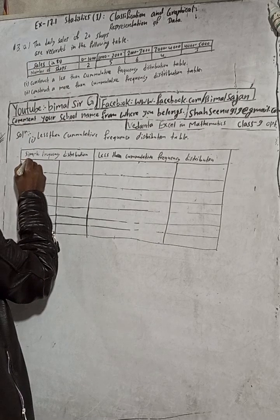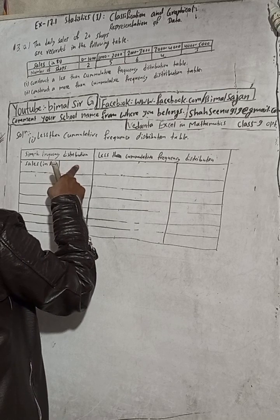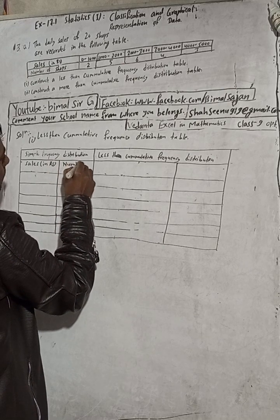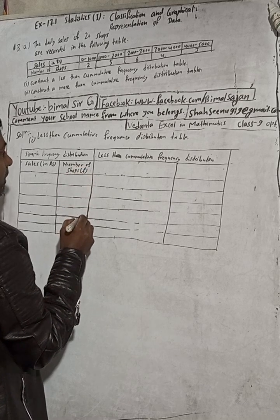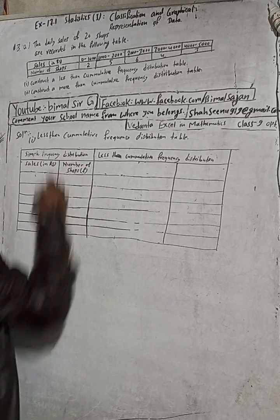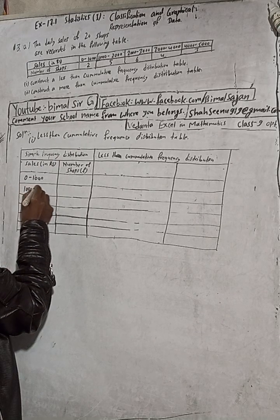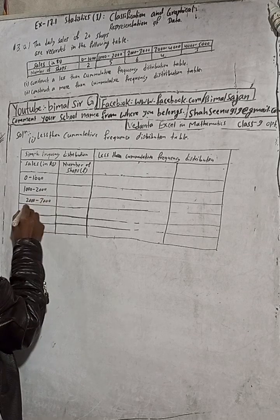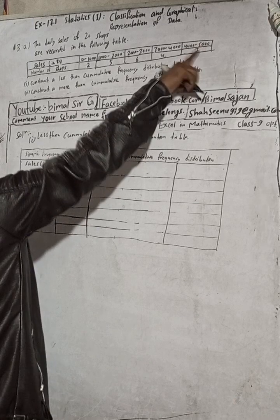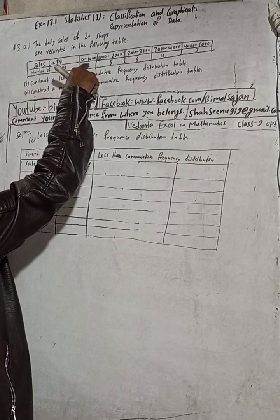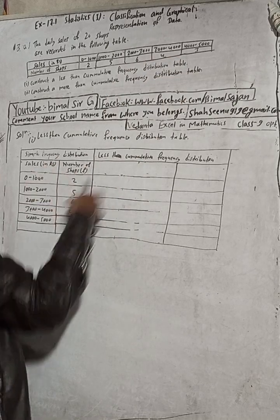In the simple frequency distribution table, I will write here: sales in rupees — 0 to 1000, 1000 to 2000, 2000 to 3000, 3000 to 4000, 4000 to 5000. And here I will write the number of shops, which is the frequency — how many shops are there. The frequencies are: 2, 5, 6, 4, and 3. This is our simple frequency distribution.